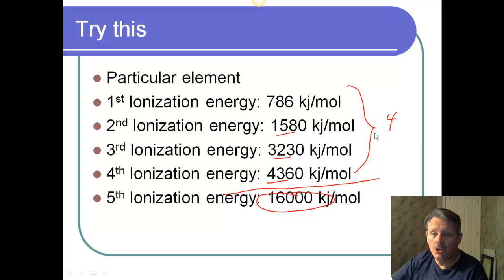So, this tells me that I should be able to lose four electrons. Well, you know what that must be then, right? You think it's in the carbon group. It happens to be silicon, which is directly below carbon. And this is something that can lose four electrons.